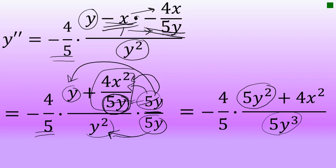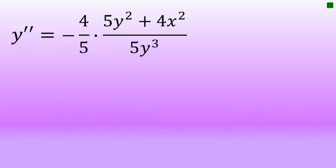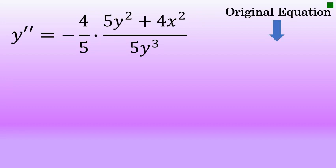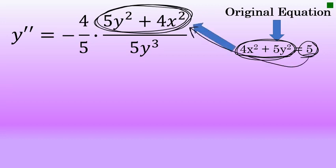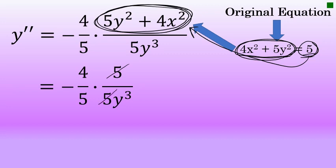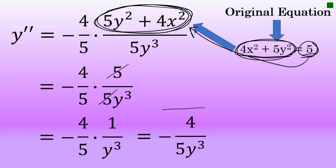Now the complex fraction is eliminated. I can do one additional simplification using an interesting property that often occurs with second derivatives of implicit equations. The original equation was 4x squared plus 5y squared equals 5. Notice that 4x squared plus 5y squared appears in the second derivative's numerator — and it equals 5. Substituting, the second derivative is negative 4 fifths times 5 over 5y to the third. The 5s divide away, leaving negative 4 fifths times 1 over y to the third, giving the simplified second derivative: negative 4 over 5y to the third.